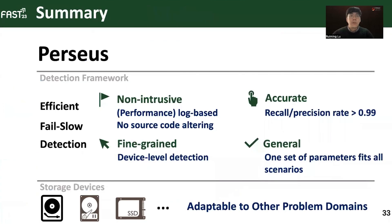In this paper, we first share our unsuccessful attempts in fail-slow detection for large-scale storage systems. We then introduced the design of Perseus, which utilizes classic machine learning techniques and scoring mechanisms to achieve non-intrusive, accurate, fine-grained, and general fail-slow detection. We believe the design methodology of Perseus can be adaptable to other problem domains, and we wish to inspire researchers in this line of work by releasing our test benchmark.